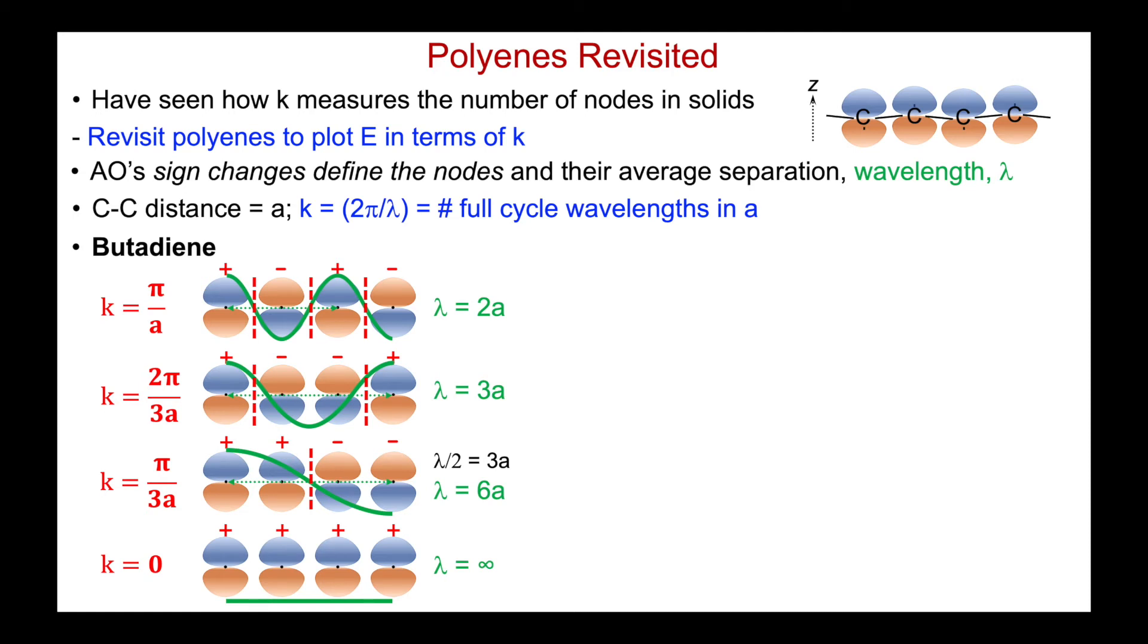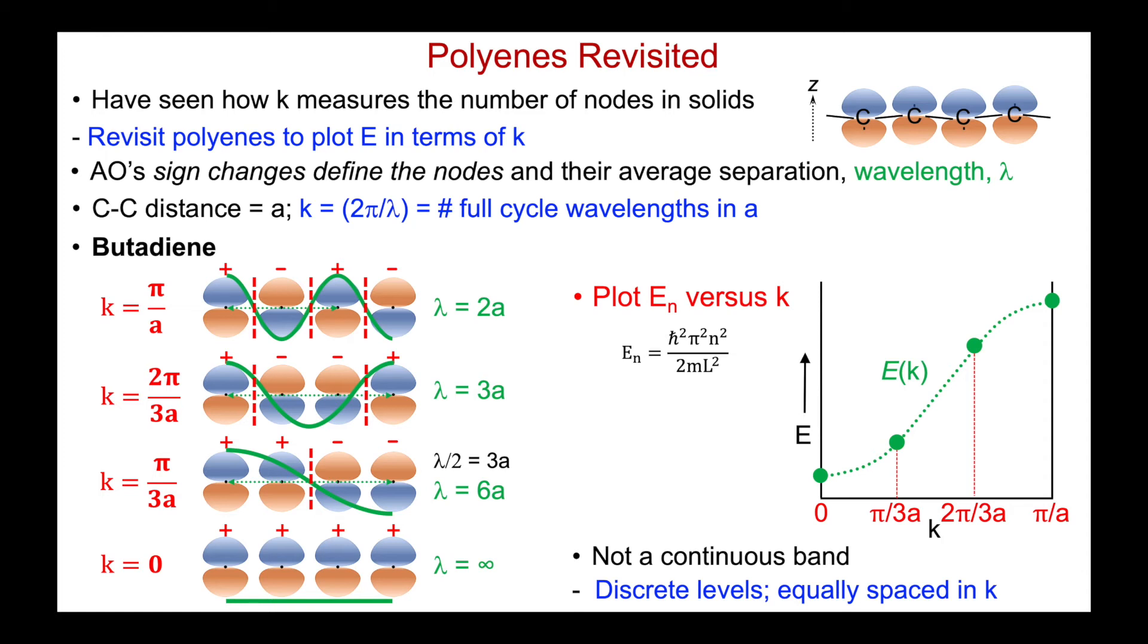And so now that we've defined a K-vector for each of these four MOs, now we can plot their energy. We could quantify the energy using a particle-in-a-box model. We won't bother with that here. We're going to plot the energy versus a K-vector. We start off with zero, the most stable, at π over A for the most antibonding. And now I've defined the K-vector of my two other MOs, one-third π over A and two-thirds π over A, and I've had them here. And so we see the K-vectors are equally spaced. And here I've just added our familiar now dispersion curve. But of course, in this case, it's not continuous. I only have four energy levels, and there's a discrete energy difference between each one. So I don't have a continuous band. I have discrete levels that are equally spaced in K.